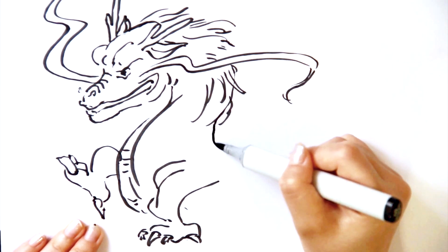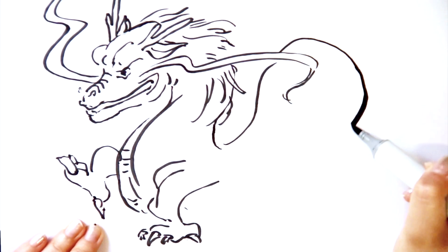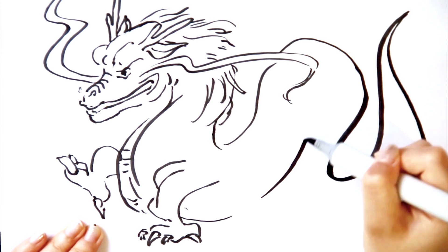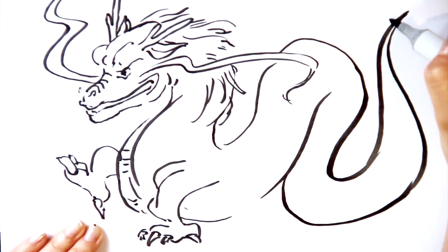The dragon's features signify great characteristics. Its protruding forehead indicates wisdom, its horns signify longevity, its ears denote success, and its claws show bravery.